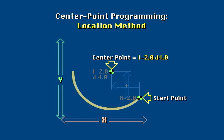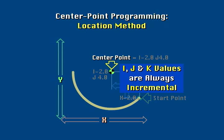It does not matter whether the programming mode is absolute or incremental. When I and J or K addresses are used, the location of the center point will always be incremental distances from the start point.